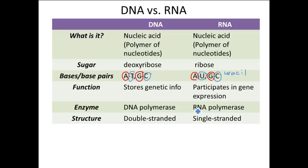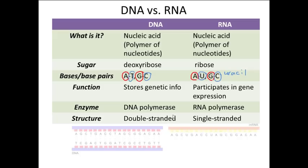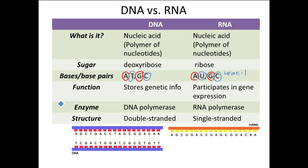Their structure is also slightly different. DNA is always double-stranded with hydrogen bonds between the bases, whereas mRNA is always single-stranded — just one long strand of mRNA nucleotides.